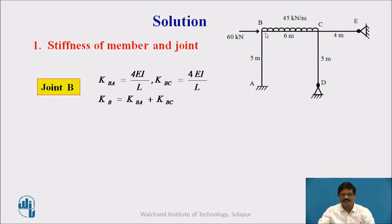At joint B, two members are meeting: BA and BC. The stiffness of BA and BC will be 4EI/L because the opposite end is fixed for BA, and for BC it is an interior support. Therefore, the stiffness of joint B is the summation, KBA plus KBC.